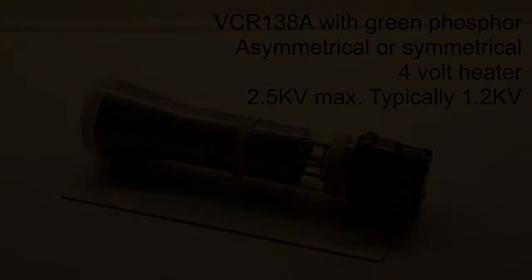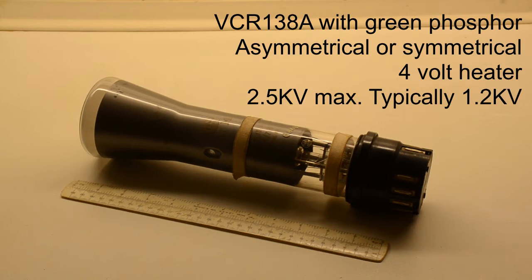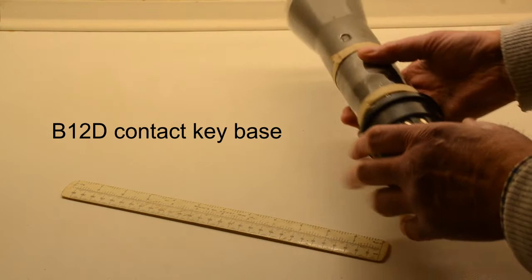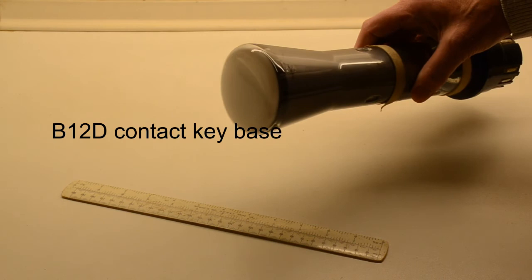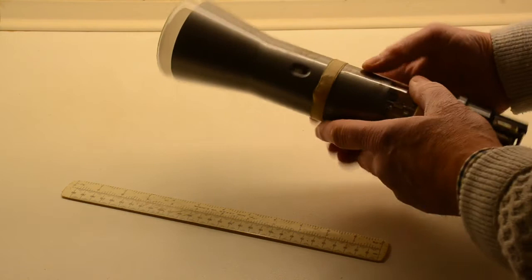For anyone familiar with wartime radar sets, I think this one is going to be something that they will know. This is the VCR138A which was used by many different pieces of equipment. It has a surprisingly big base considering that there's only a three and a quarter inch screen at the front. These little indentations here appear to be, I think, just simply to lock the plates in position to keep it secure.